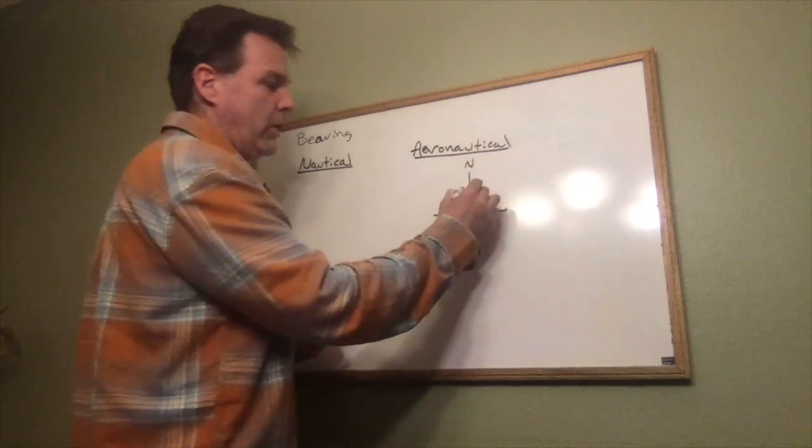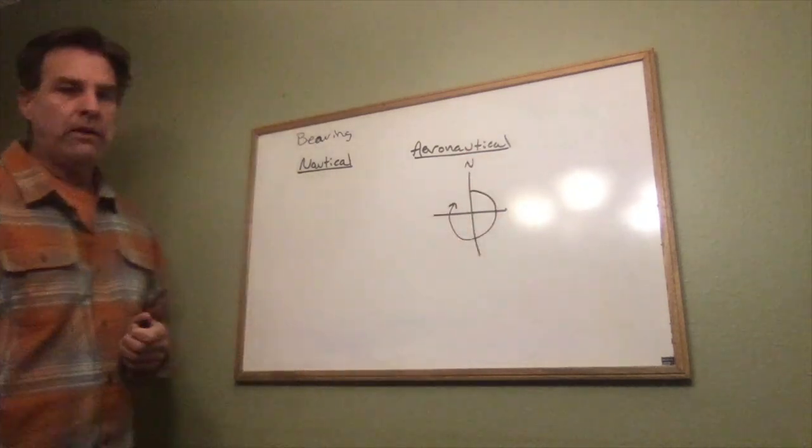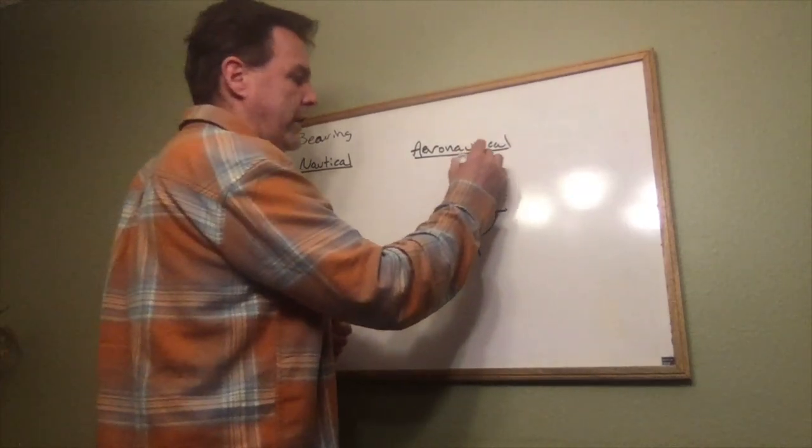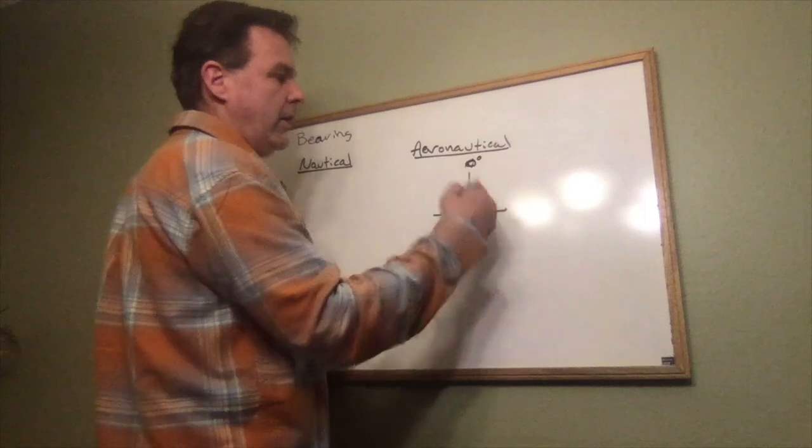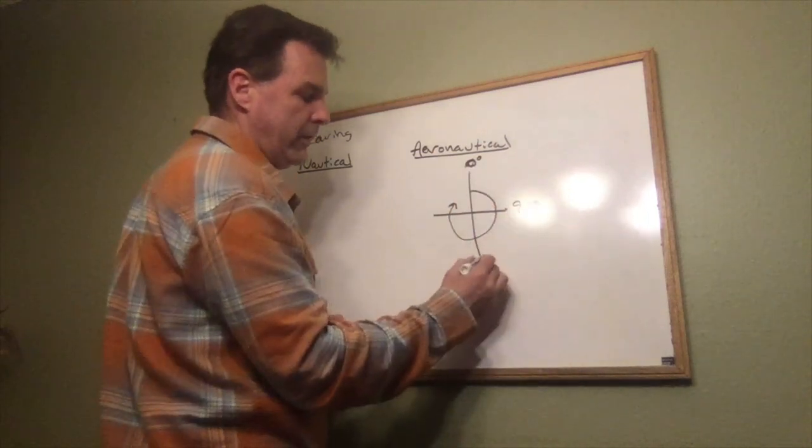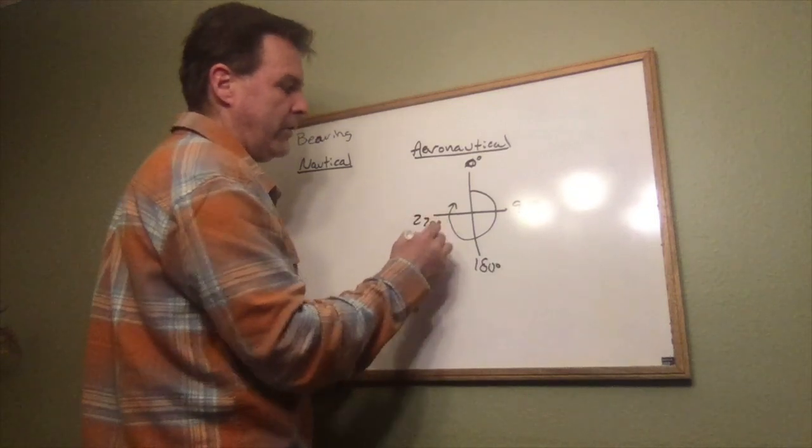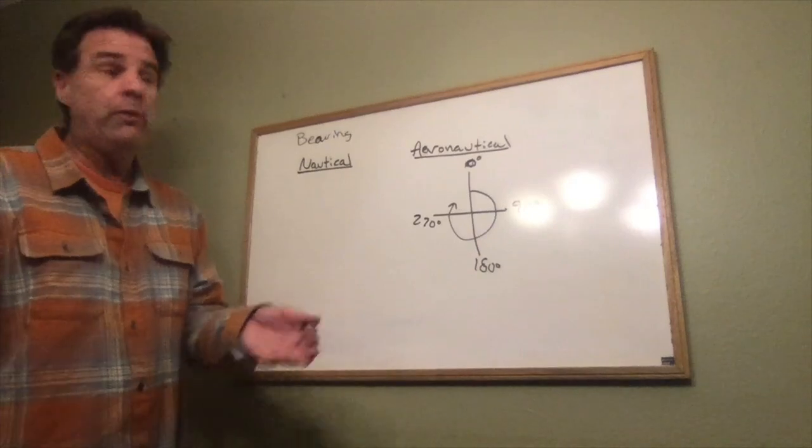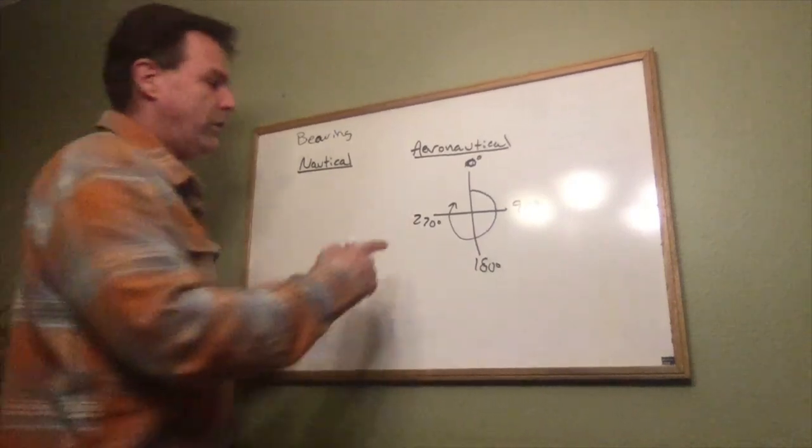Aeronautical just starts with the north and goes in a clockwise direction. So this is zero degrees over here. Aeronautically, we would say this is 90 degrees, this is 180 degrees, this is 270 degrees, and then we go back up to where it would be 360, but we'll never use 360—we just go back up to zero.